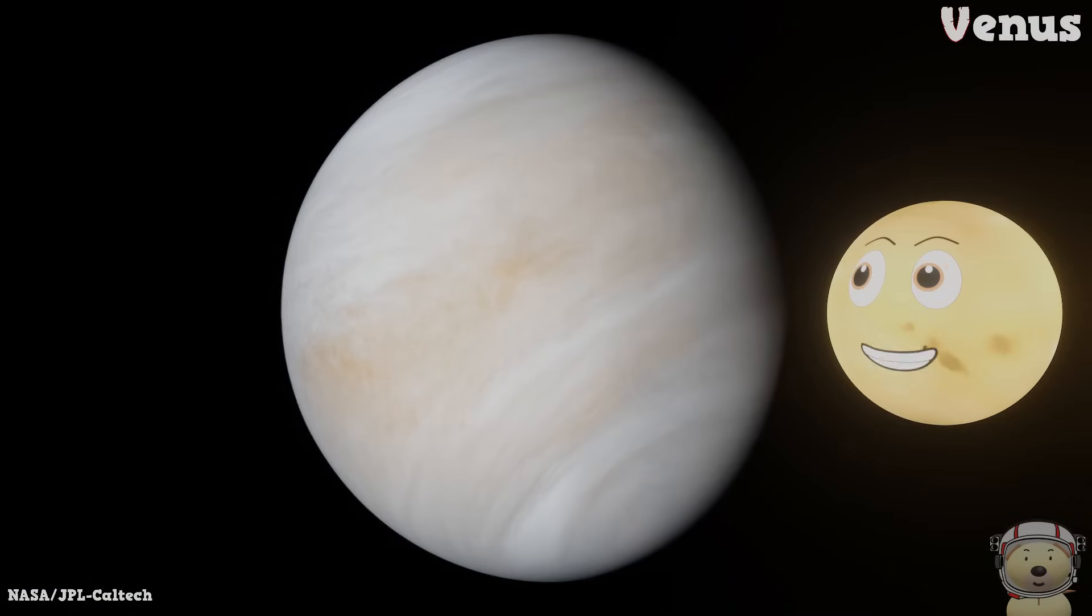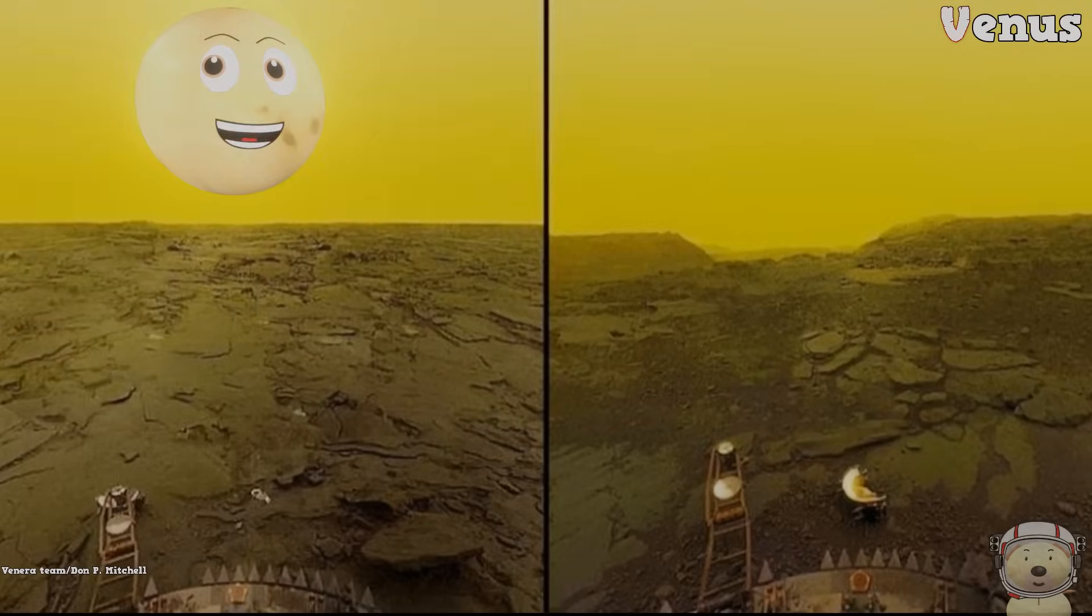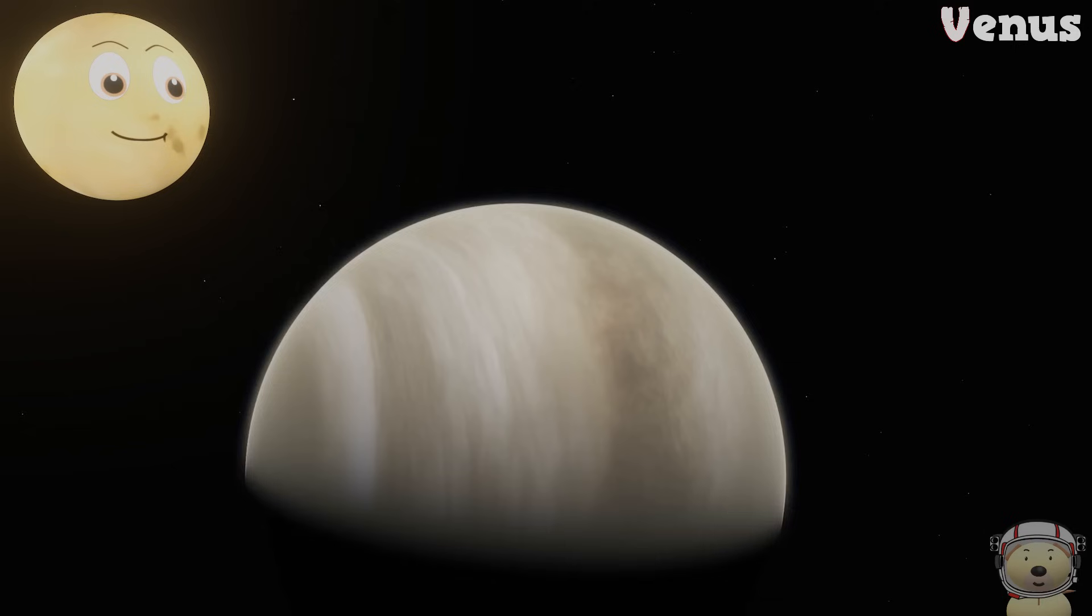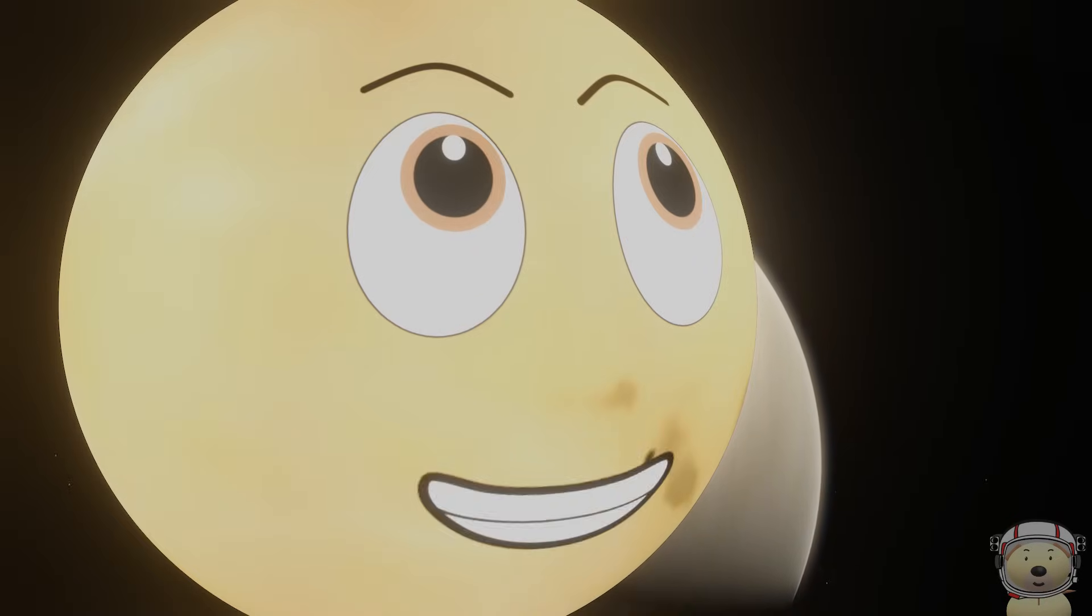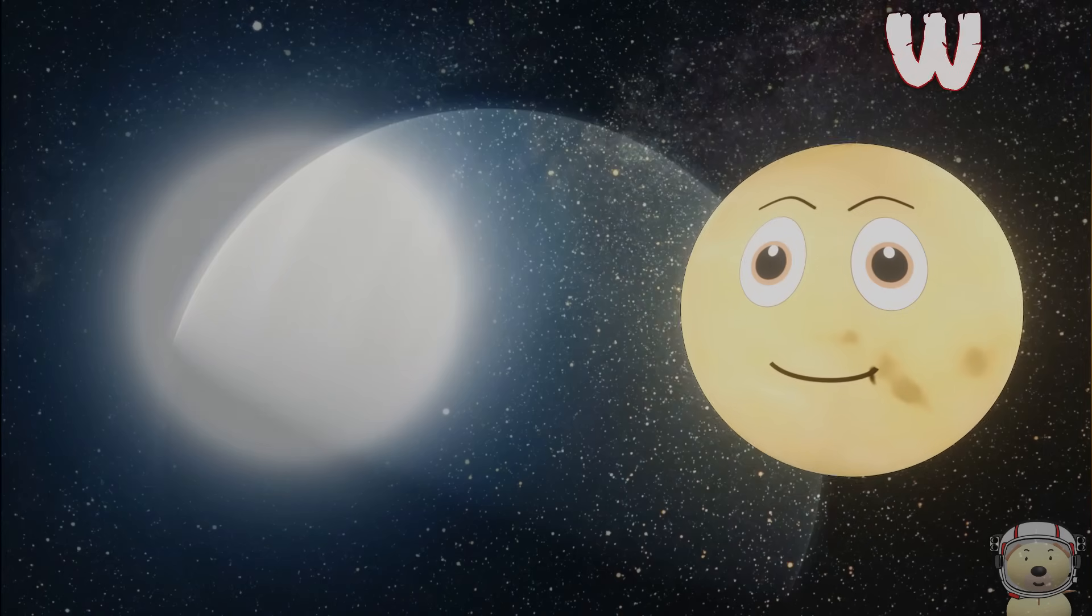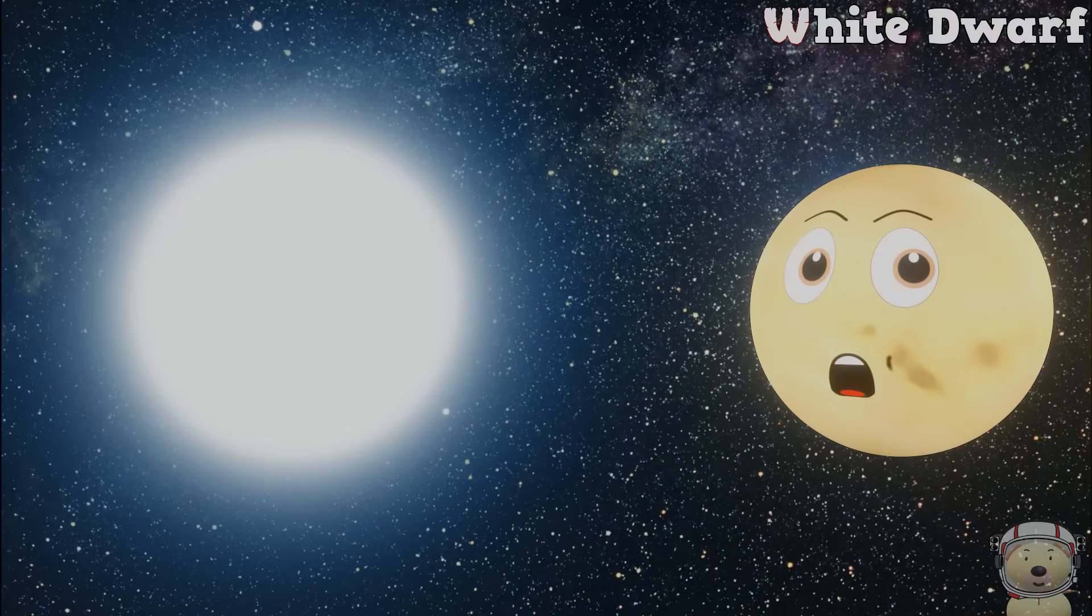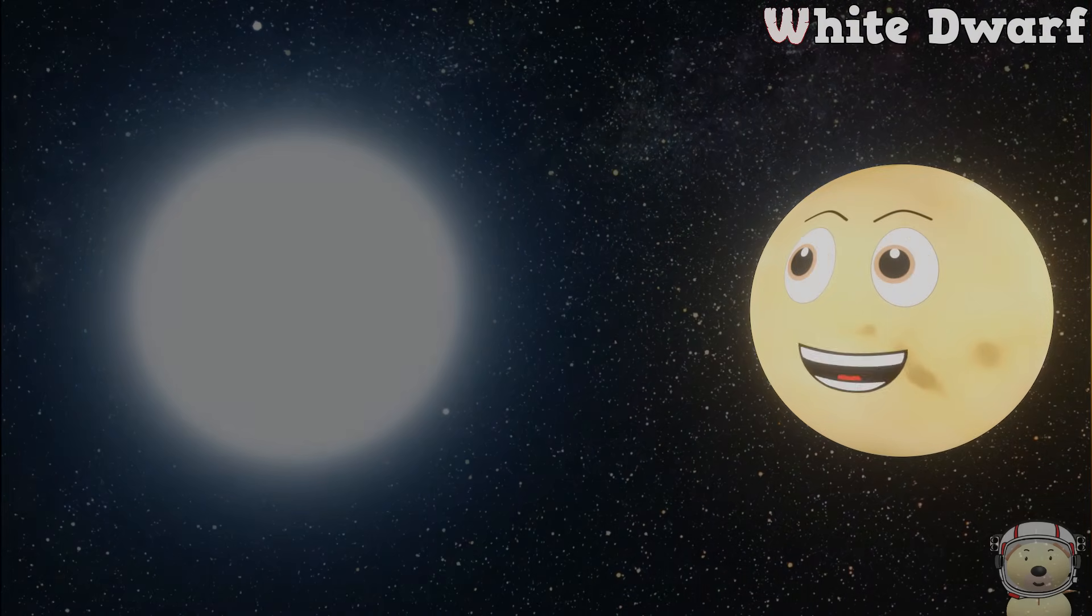V is for Venus, it's boiling on me. I'm even hotter than poor Mercury. W is for white dwarf, the end of the sun, losing its gases to space, then it is done.